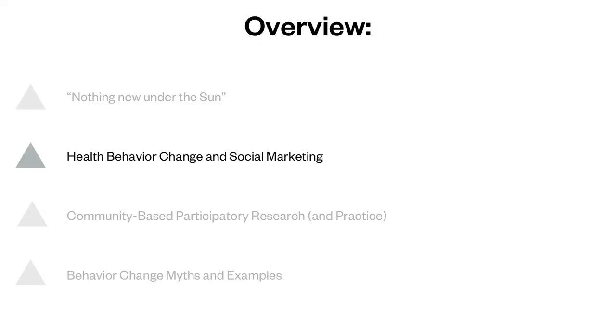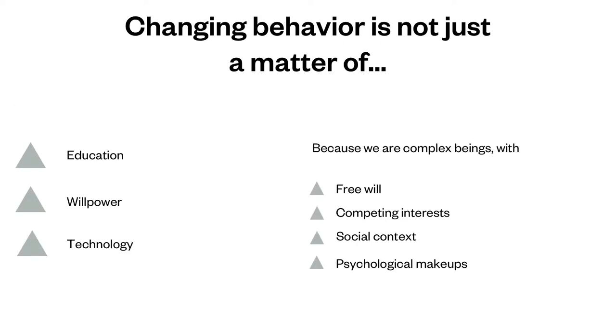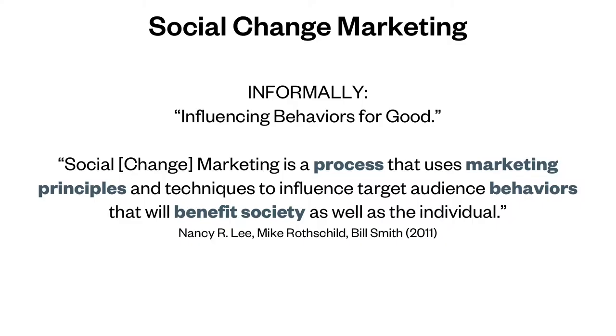Let's talk about health behavior change and social marketing. Changing behavior is not just a matter of giving people new information, willpower, or technology, because all of us are really complex and there are other factors that determine what we do and don't do. Social marketing is just like commercial marketing, but instead of selling a product for personal profit, it's trying to change behavior for a social good.